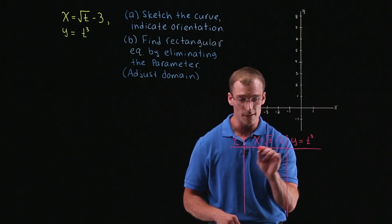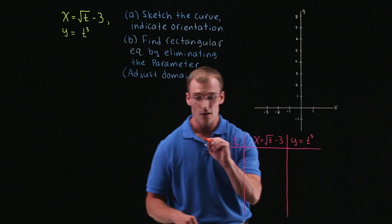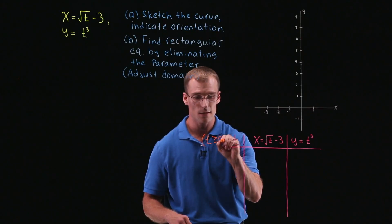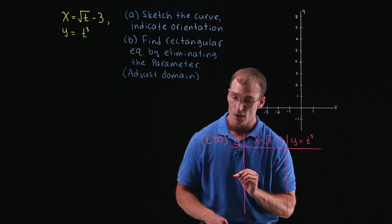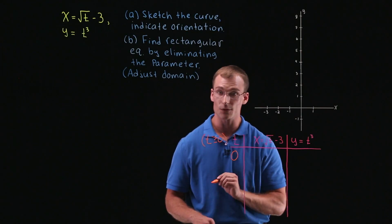Now, there is going to be a restriction on t. If we look for x, since we have the square root, we know t cannot be negative. So for our values of t to start with, t can only be greater than or equal to 0. So that at least gives us a starting point. So we'll go ahead and start with t equal to 0.